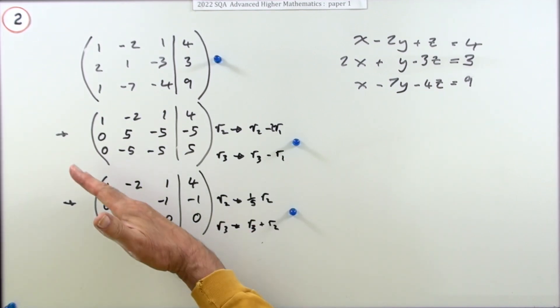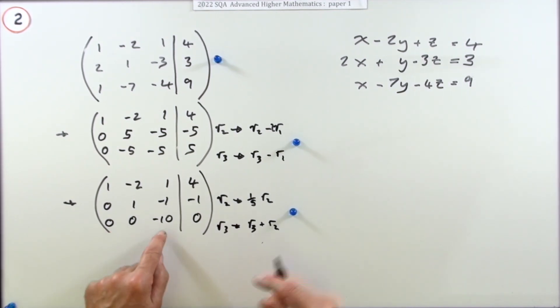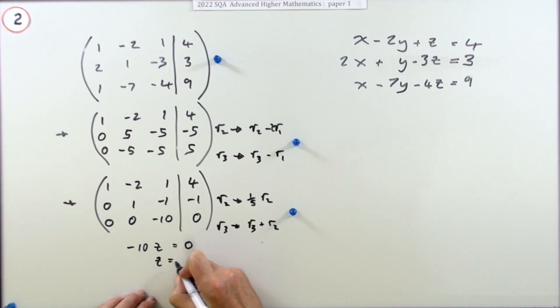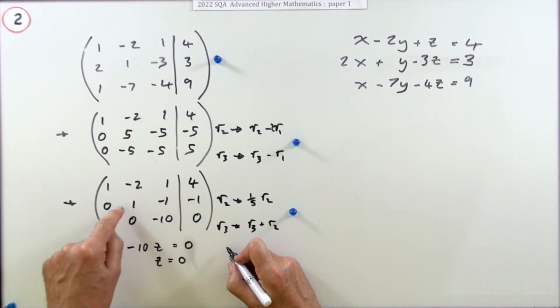So obviously 0 and 0: 0. -5 and 5 is 0. -5, -5 is -10, and that's 0. Now using elementary row operations to get it into upper triangular form, that's a mark.